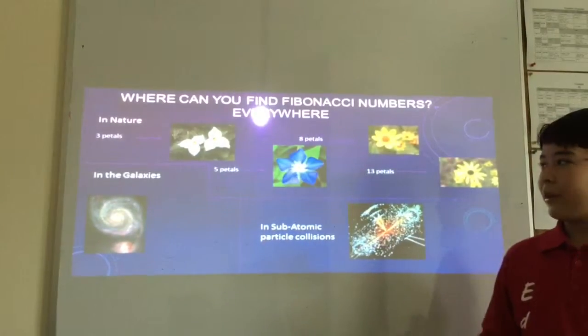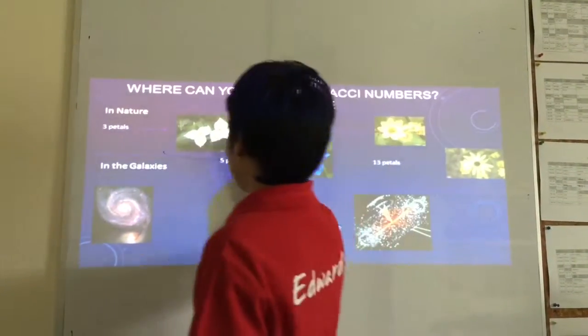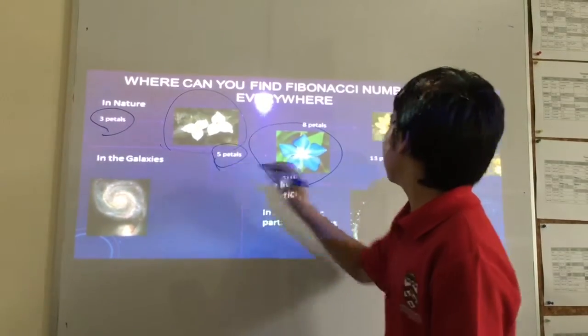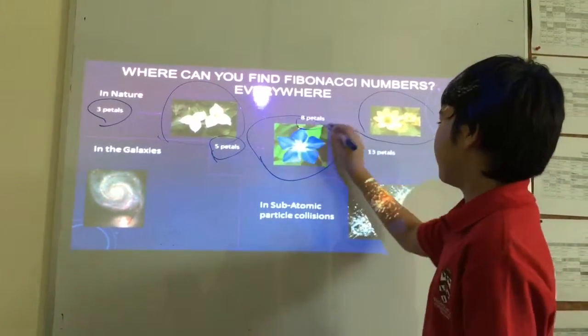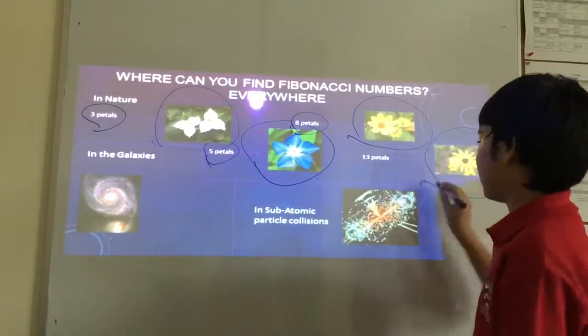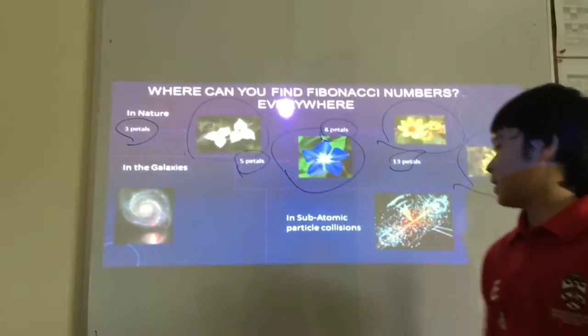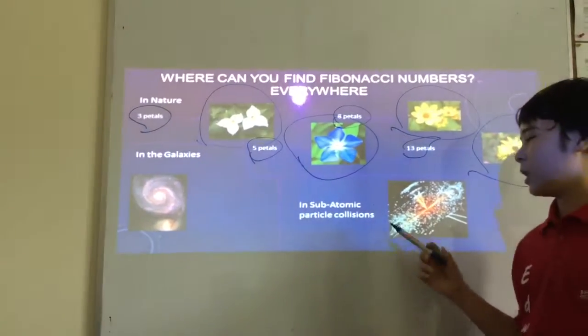Fibonacci numbers are everywhere. This flower has three petals. This flower has five petals. This flower has eight petals. And this one has 13. The Fibonacci numbers are in galaxies and also in subatomic particle collisions.